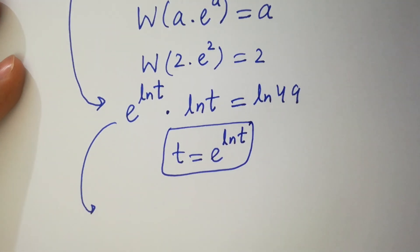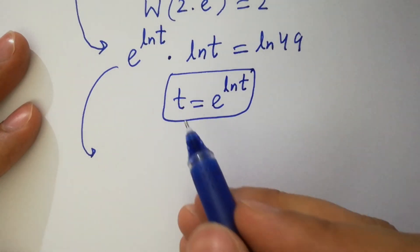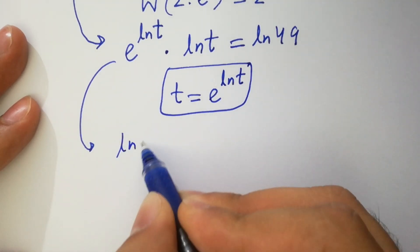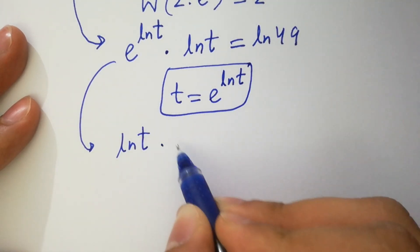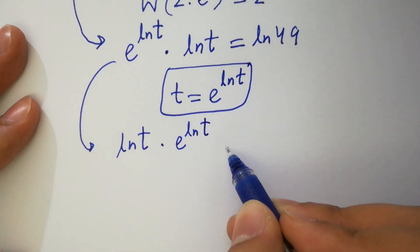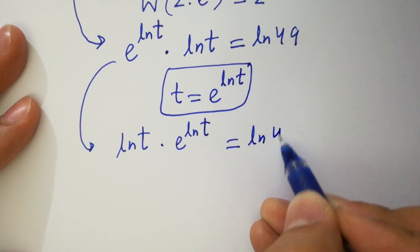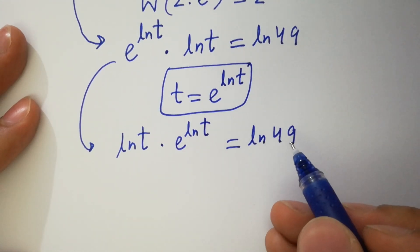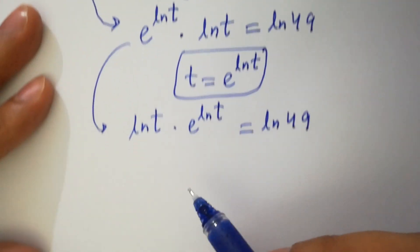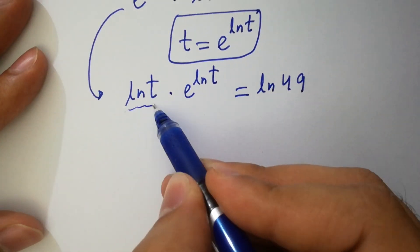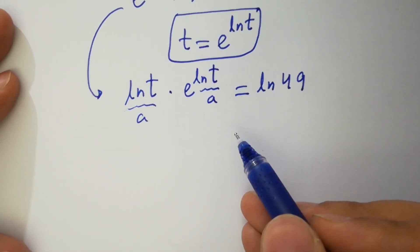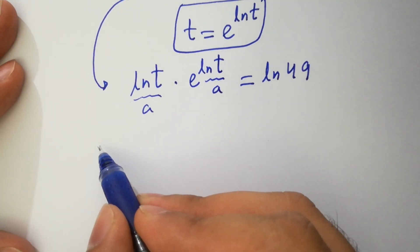So this can be written as ln t times e to the power ln t equals ln 49, which is like a times e to the power a. This is a and this is also equal to a. Supply Lambert W function on both sides.